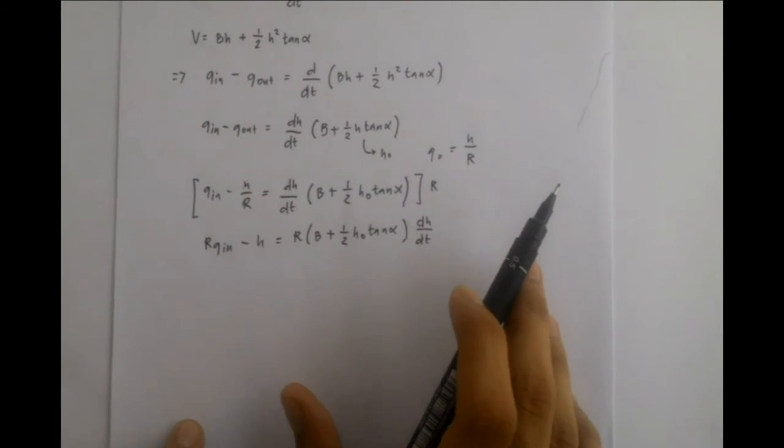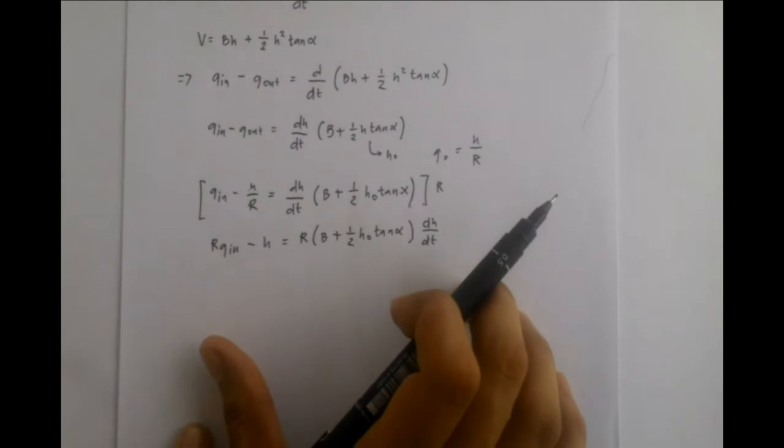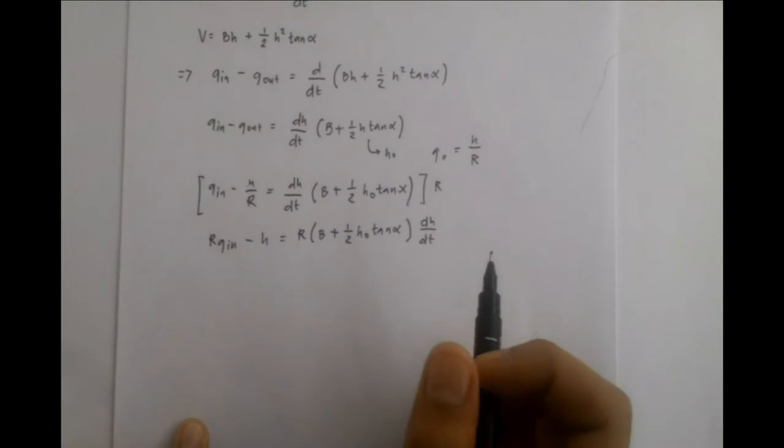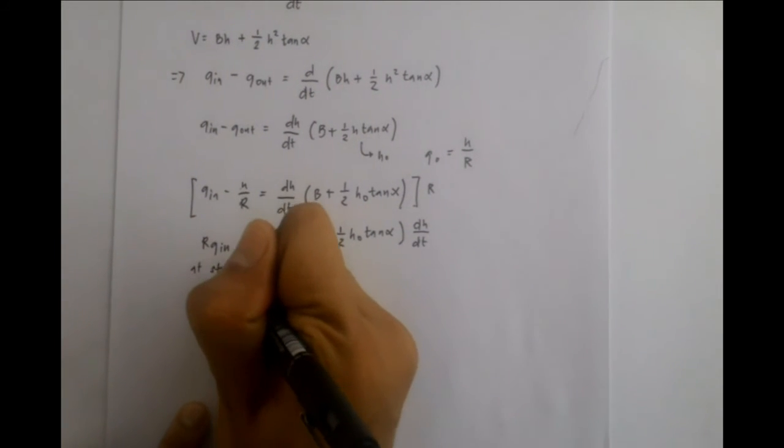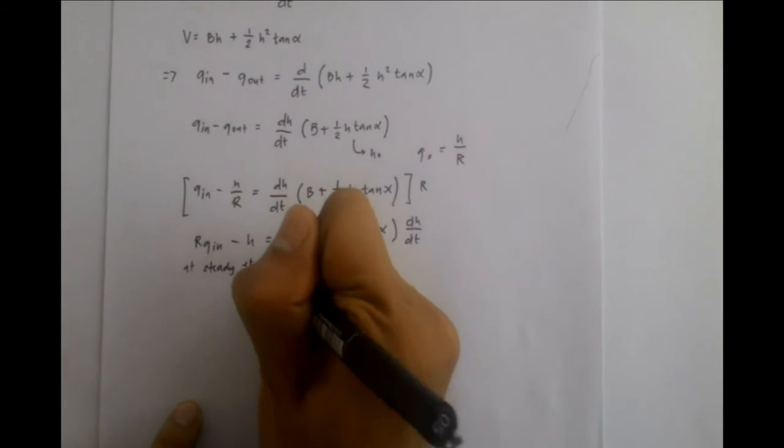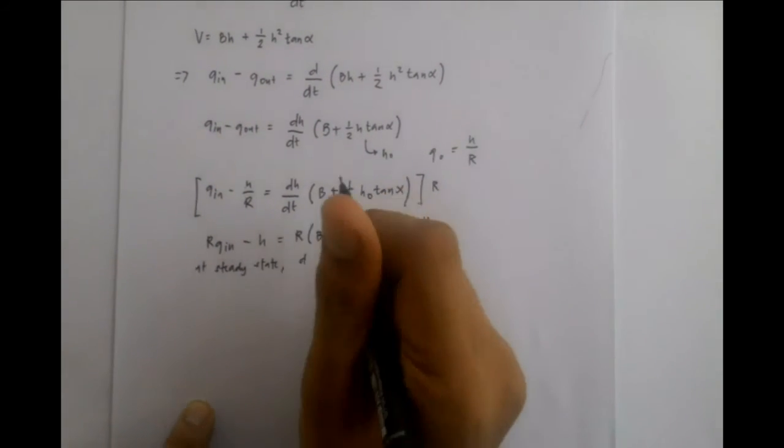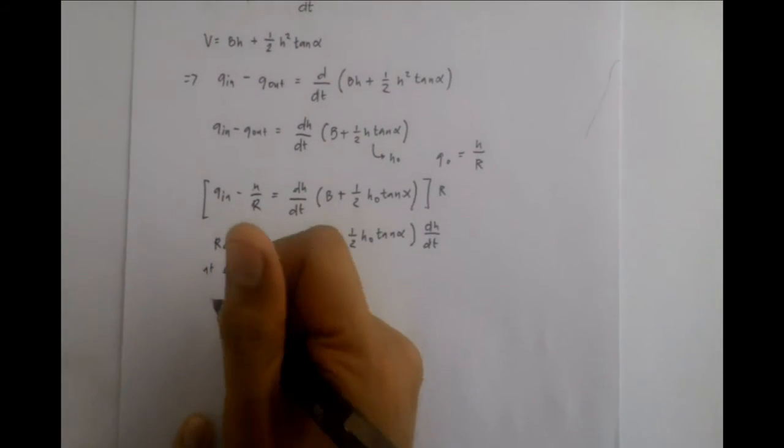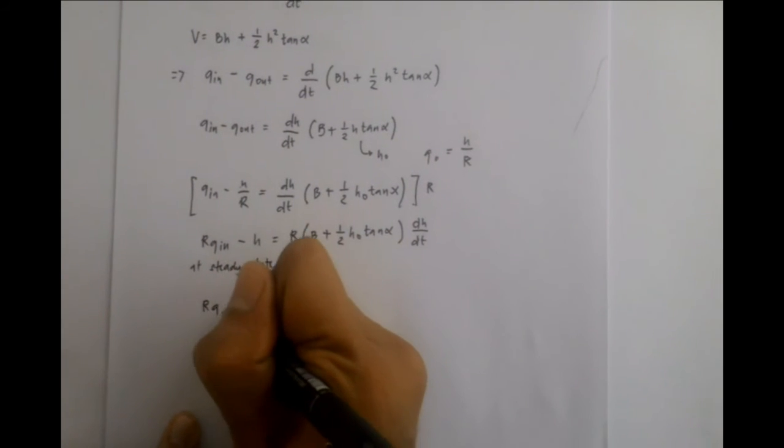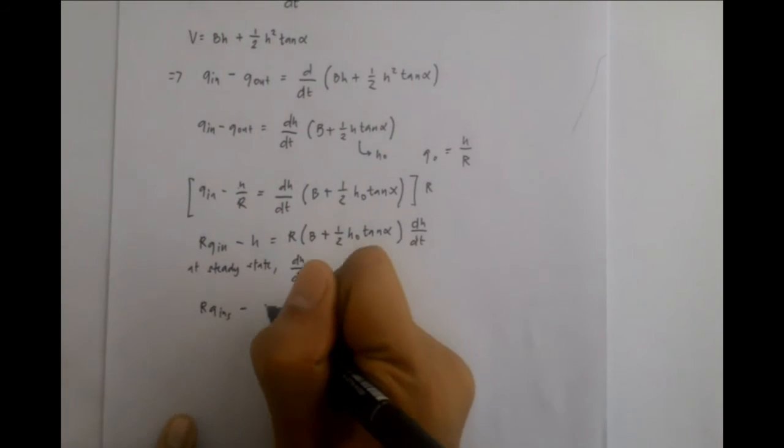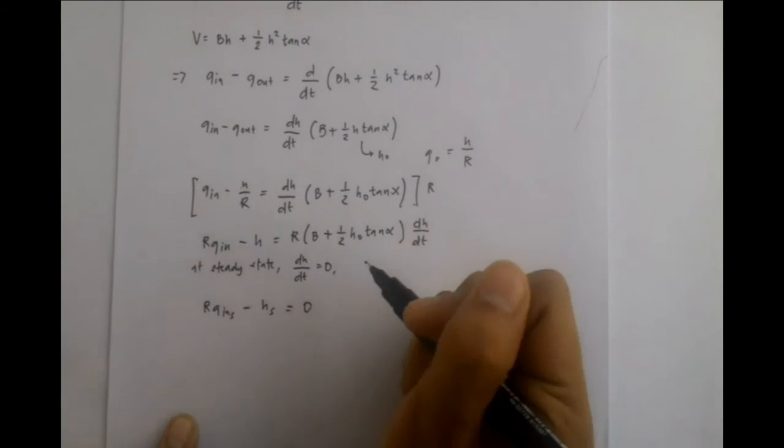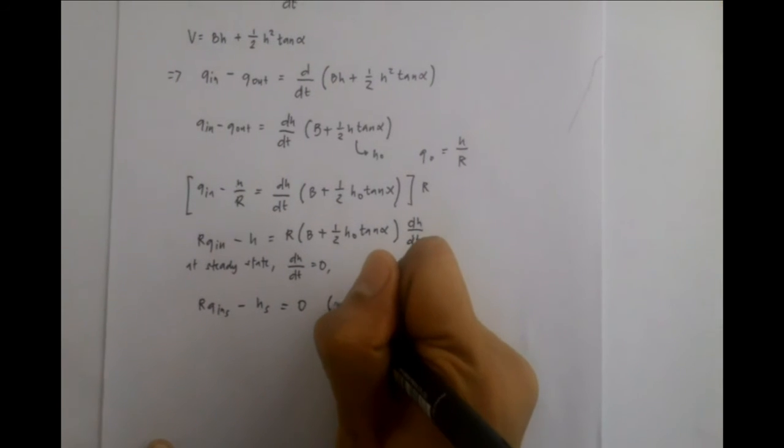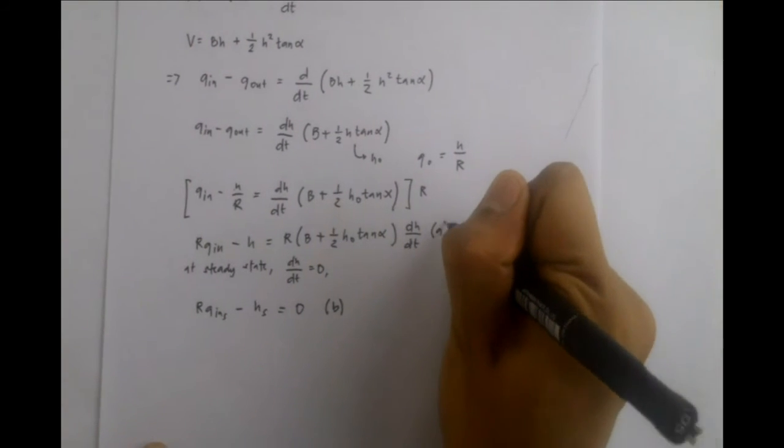At steady state, the change in level with respect to time is equal to zero. Writing this in formula, dH/dt equals zero. Thus, making this equation into RQ_in at steady state minus H at steady state equals zero. Let's label this equation B and the former equation as A.